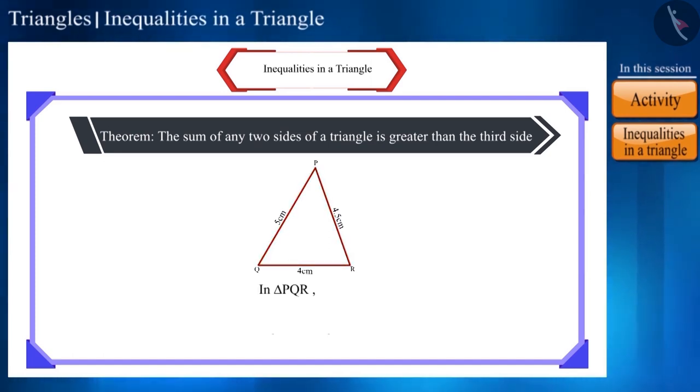Therefore, we can say for triangle PQR that the sum of sides PQ and QR is greater than side PR. The sum of sides PQ and PR is greater than side QR. And the sum of sides QR and PR is greater than side PQ.